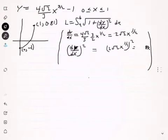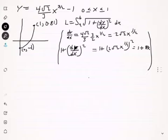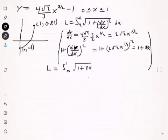We need not just that, but 1 plus that. So we have 1 plus 8x. The length is then the integral from 0 to 1 of the square root of 1 plus 8x — because that's what 1 plus the derivative squared is — all under the square root, with respect to x.